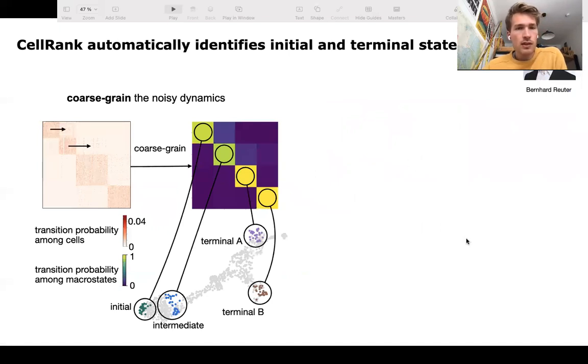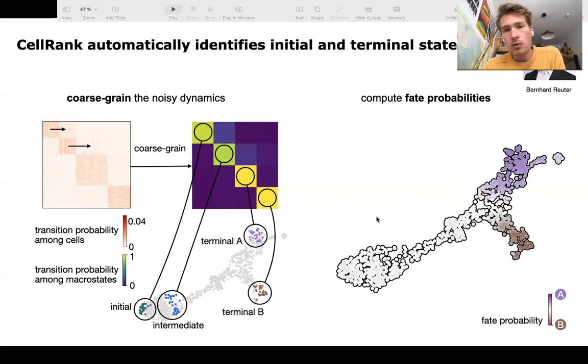How do we do this? We adapted an algorithm called Generalized Perron Cluster Cluster Analysis by Bernhard here on the top, which takes in the large cell-cell transition matrix that we compute based on RNA velocity and it coarse grains the state matrix into a main set of macrostates. We then identify which ones of the macrostates are initial and terminal and we compute fate probabilities towards the terminal macrostates.